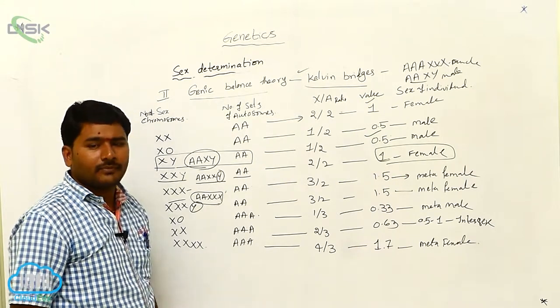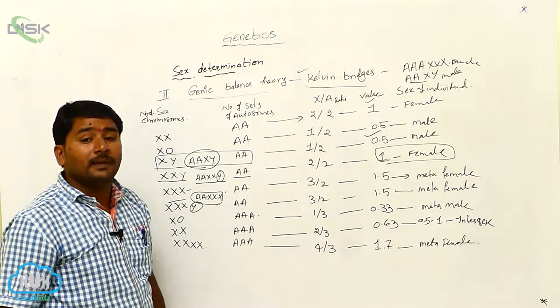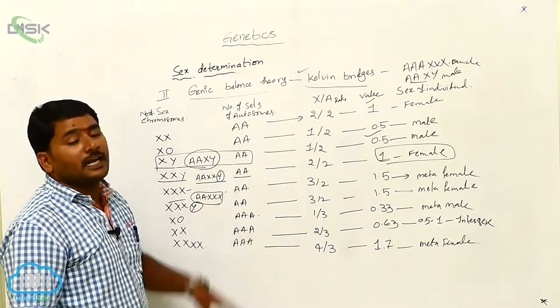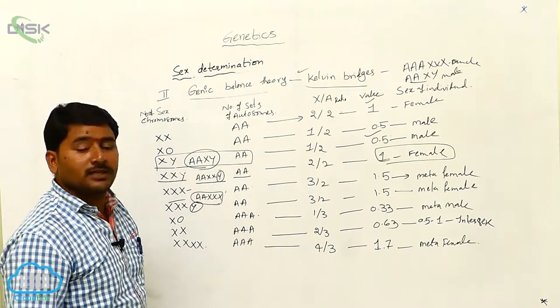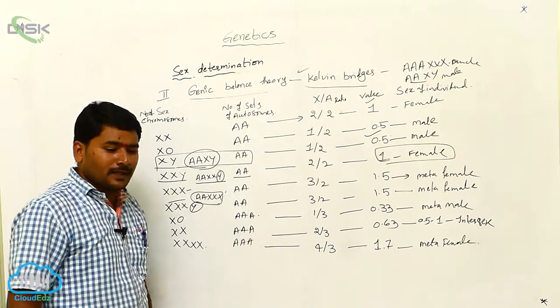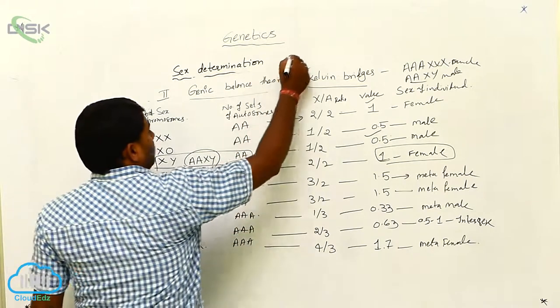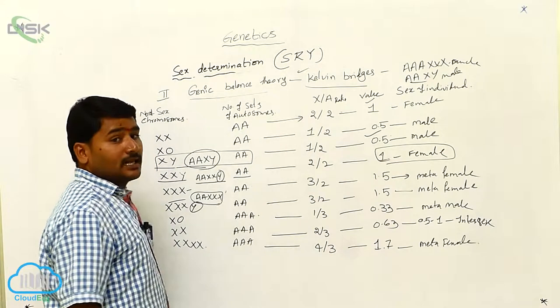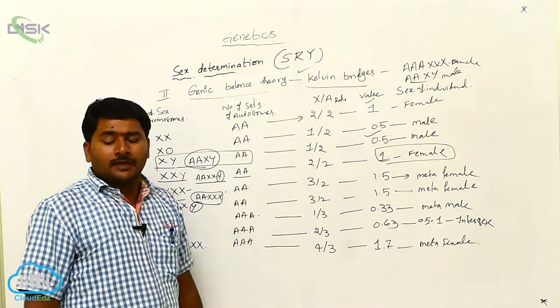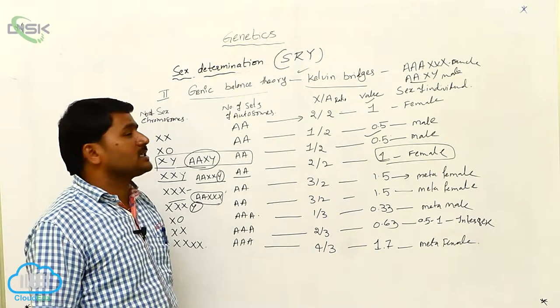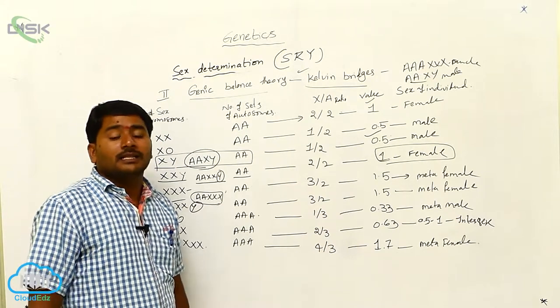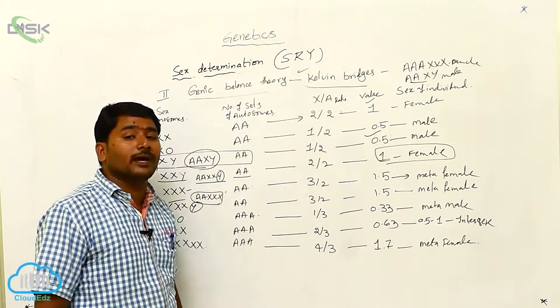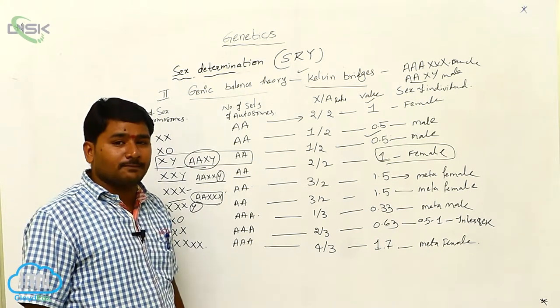So that is why in the Drosophila, male sex is determined by the number of X chromosomes by number of sets of autosomes, not the Y chromosome. Means Y chromosome last structure that is called as SRY. So in the Y chromosome Drosophila, there is no SRY. That is sex determination region on the Y chromosome. So SRY is absent.